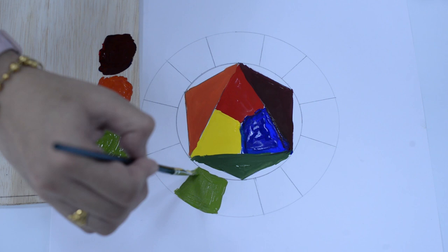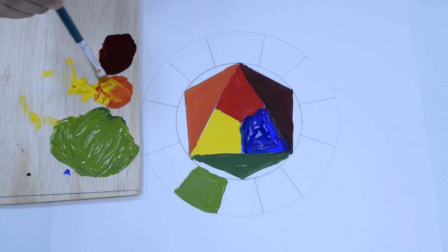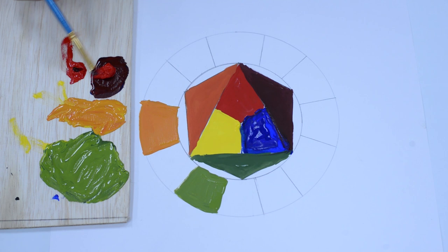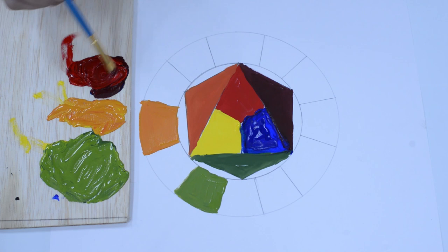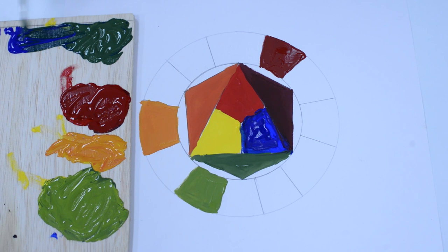Mixing yellow and orange will become yellow-orange or known as amber. Mixing red and purple will become red-purple or known as magenta. Mixing blue and green color will become blue-green or known as teal.